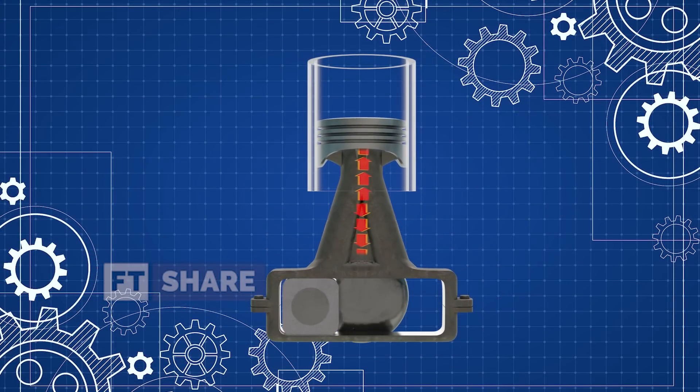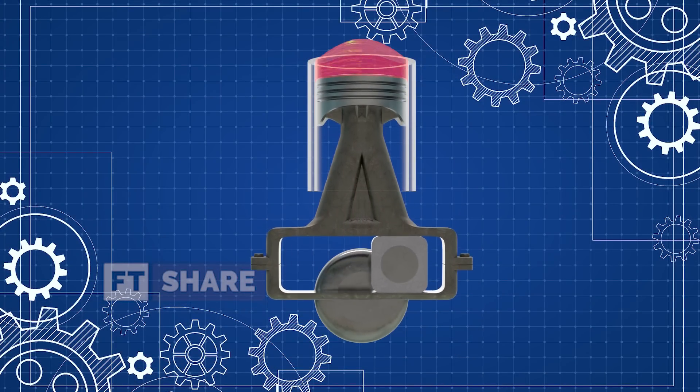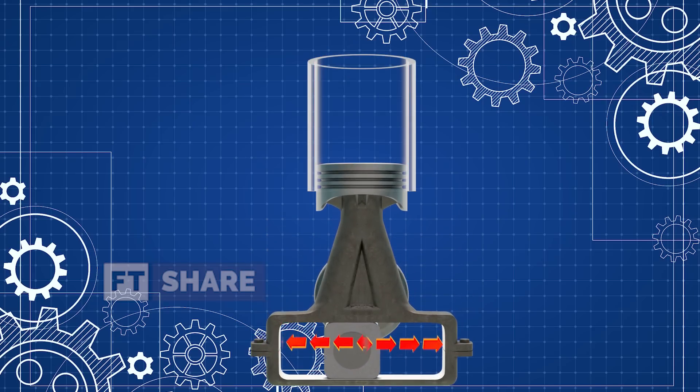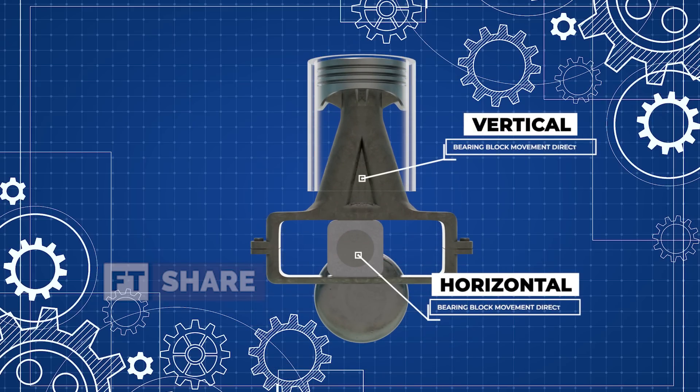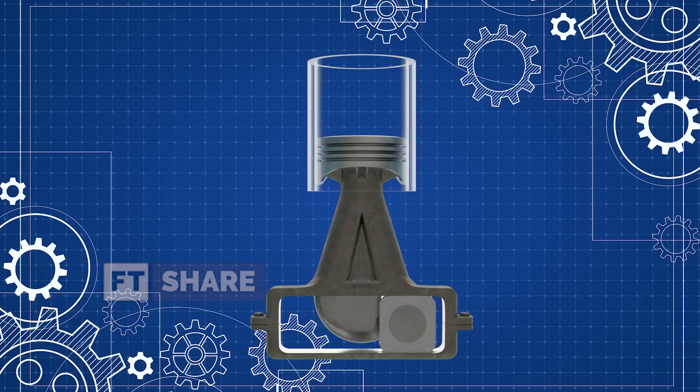This engine employs a connecting rod that always maintains a vertical position. Yet, it manages to convert that vertical motion into horizontal movement, effectively minimizing the twisting effect typically encountered. Consequently, this reduces friction on its cylinder walls.